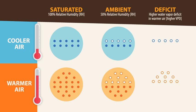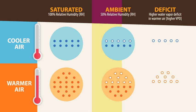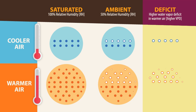VPD and RH might seem to be telling you the same thing, but there are some key differences between the two variables. In this figure, you can see cooler and warmer air parcels. The warmer air holds more water vapor molecules. Let's say both parcels of air were at 50% RH — do you think fuels would dry out at the same speed in both? When you consider the deficit, you can see that the warmer air has a higher capacity for water vapor. The air's thirst for water vapor at a given RH is much greater at higher temperatures than at lower temperatures. Higher temperatures result in exponentially higher saturation vapor pressures. This confirms that hotter conditions lead to drier fuels and potentially higher fire behavior.